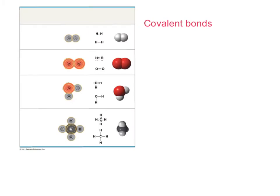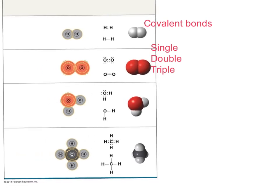If ionic bonds involve electron transfer, a covalent bond is when electrons are shared when there's an incomplete valent shell. Covalent bonds are stronger than ionic bonds. We can have single covalent bonds sharing one pair of electrons, double covalent bonds, and triple covalent bonds — for example, nitrogen can share three pairs of electrons.